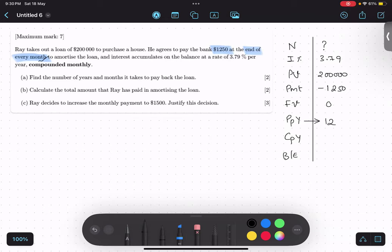CPY, compounding is happening? 12. Yeah, compounding is happening also monthly, which means 12. 12 times compounding is going to happen.